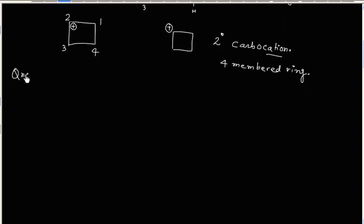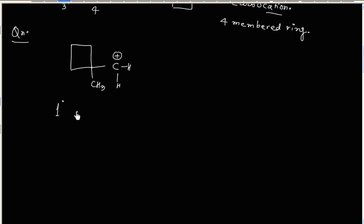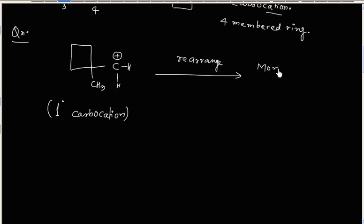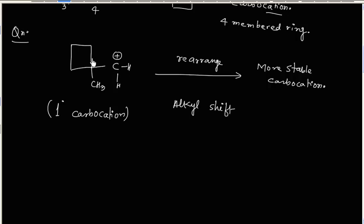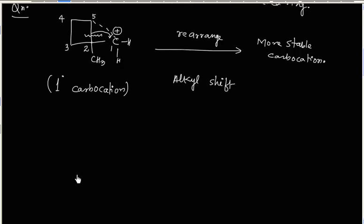Similarly, let us try this next problem. We have this carbocation — it is again a 1° carbocation, and it can rearrange to generate a more stable carbocation. Once again we can do an alkyl shift. If I migrate this alkyl group to this carbon, we are connecting these two carbons and breaking this bond. Counting gives us 1, 2, 3, 4, 5 — so we will have a 5-membered ring.